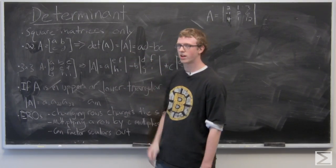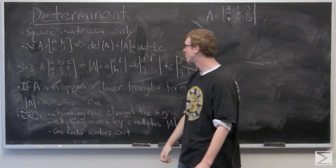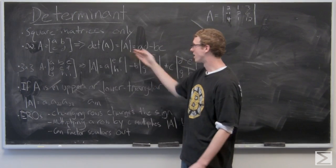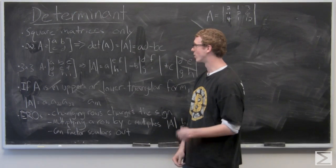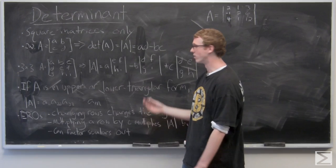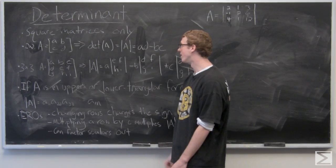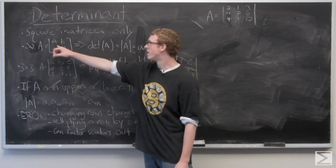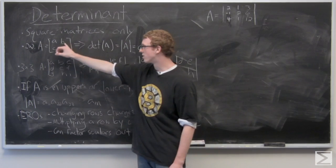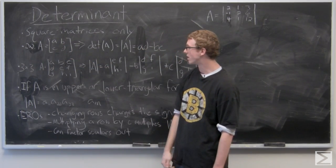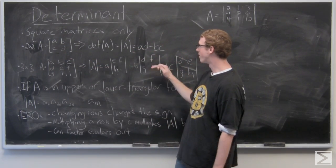So the determinant of A, also denoted with absolute value type symbols. Don't be confused, that's not the absolute value of A. When we're looking at matrices, those symbols mean determinant. And for A, it's simply the entries on the diagonal subtracted, and subtract the entries on the other diagonal, so you have AD minus BC.